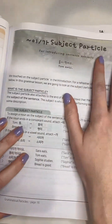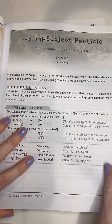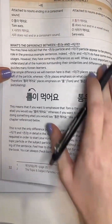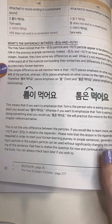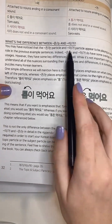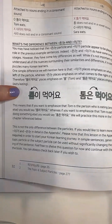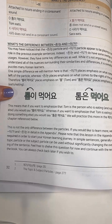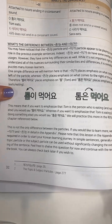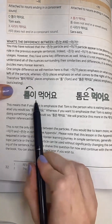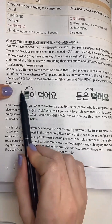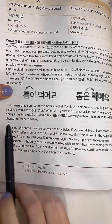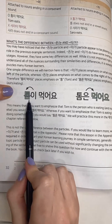This is the subject particle section we're talking about here. We have a section where we talk about the differences between 은/는 and 이/가. Essentially there are a couple of differences, not just one. A good one to know is that the subject particle emphasizes the thing to the left — it emphasizes the subject. In this case, Tom is being emphasized.